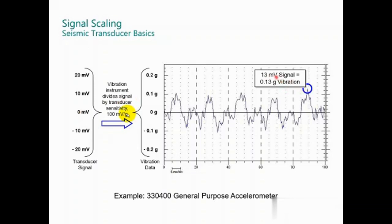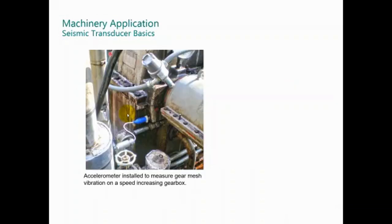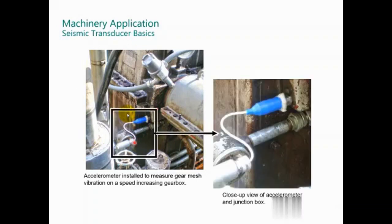In this case, 30 millivolts equals 0.13 g's. For the application, you can see the seismometer installed in the gearbox, and the cable has a protector here. In this junction box, you have protection to avoid the water entering into the pipe.